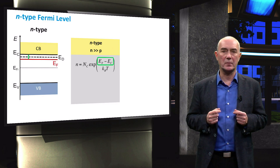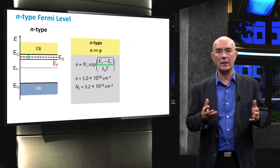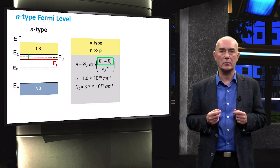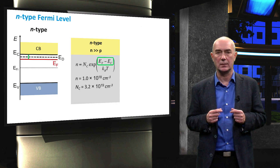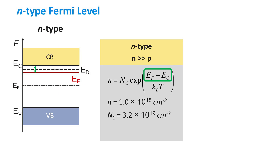Using the example where N equals 10¹⁸ per cubic centimeter, and knowing the effective density of states in the conduction band of silicon, solving for the Fermi level is quite straightforward. We end up with a value of −0.09 electron volts, meaning the Fermi level is only 0.09 eV below the edge of the conduction band.